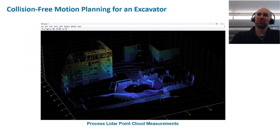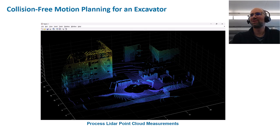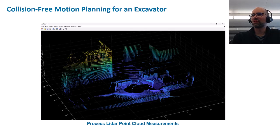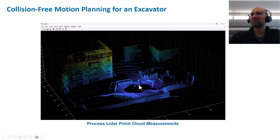In order to do motion planning, we first need a map of our environment so we know where to avoid collisions. Here we have LiDAR data — I'll go into detail a bit later on how we acquired it. We have four LiDARs and we used MATLAB to process those point cloud measurements. We end up with some houses around us, some dumpsters, and the excavator itself, because the LiDAR also picked that up.